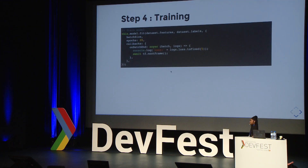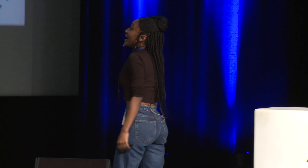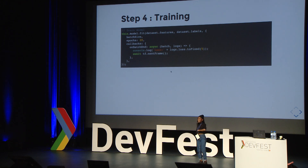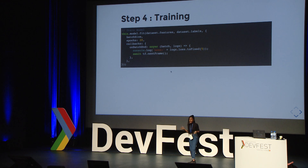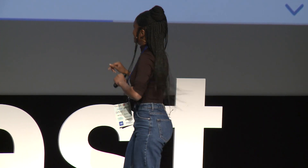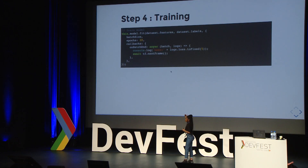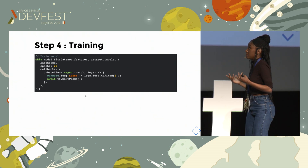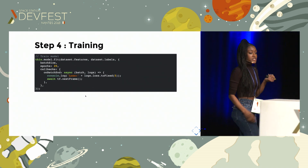Step four: we have our model and our training data, so we train it. The method to do so is `fit`. This method is asynchronous — we're in JavaScript, and you don't know how much time your training will take. The `fit` method takes arguments like `batchSize`, which is the number of examples per gradient update, `epochs`, which is the number of iterations, and `callbacks` — a list of events you can listen to, such as `onBatchEnd` at the end of one batch.